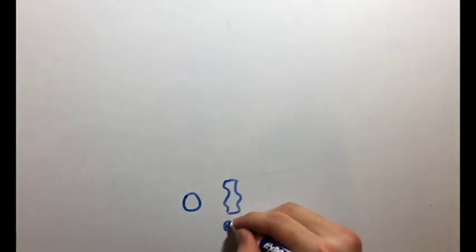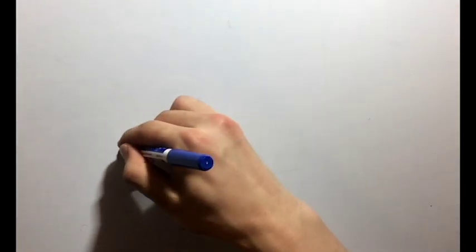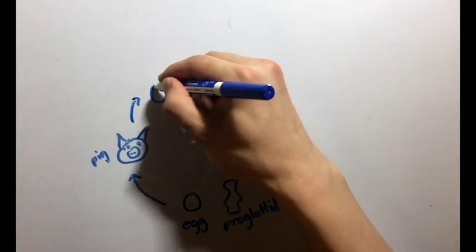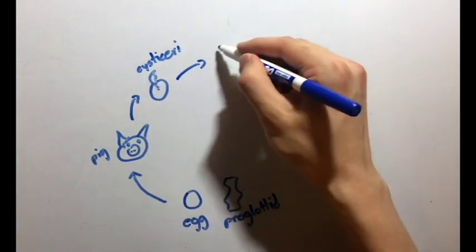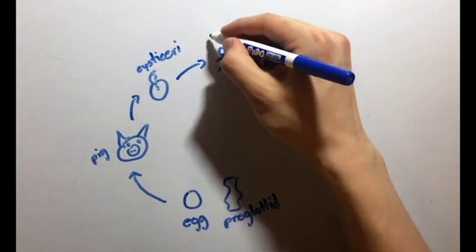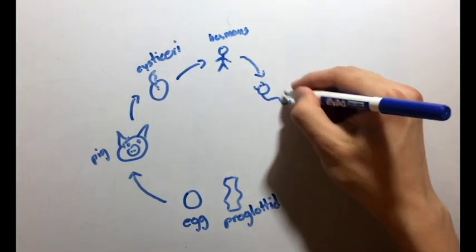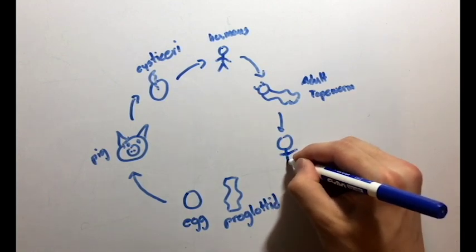In the life cycle of T-Cyllium, eggs and proglotids are passed with feces, and the pigs become infected by ingesting contaminated vegetation. The onchospheres or eggs hatch and develop into bladder-shaped worms called cysticerca. Humans become infected by eating undercooked infected meat. The cysticerca develop into adult tapeworms. The adult tapeworms attach to the small intestine by their scolex and live in the small intestine for the rest of their life cycle. The adults produce proglotids which detach from the tapeworm and are passed in the stool.